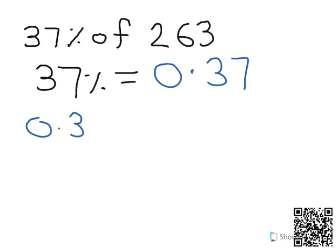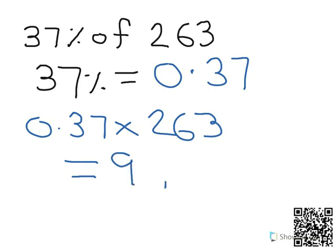So then on your calculator, 0.37 times 263, and we get 97.31. Done.